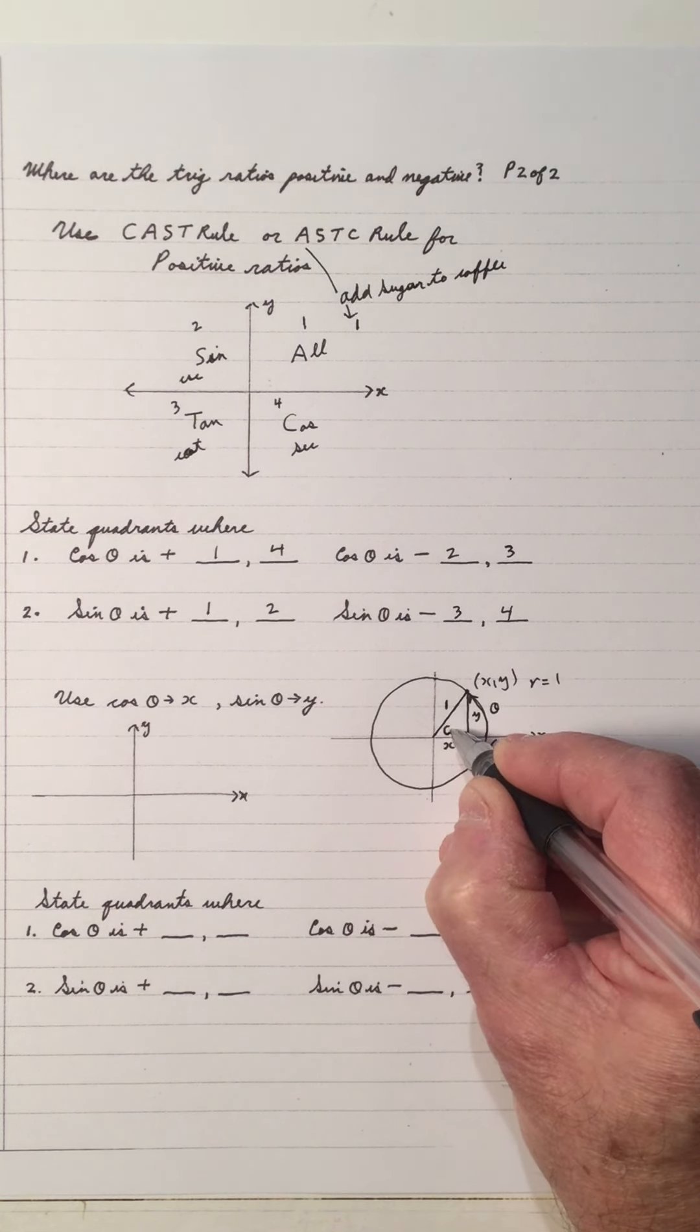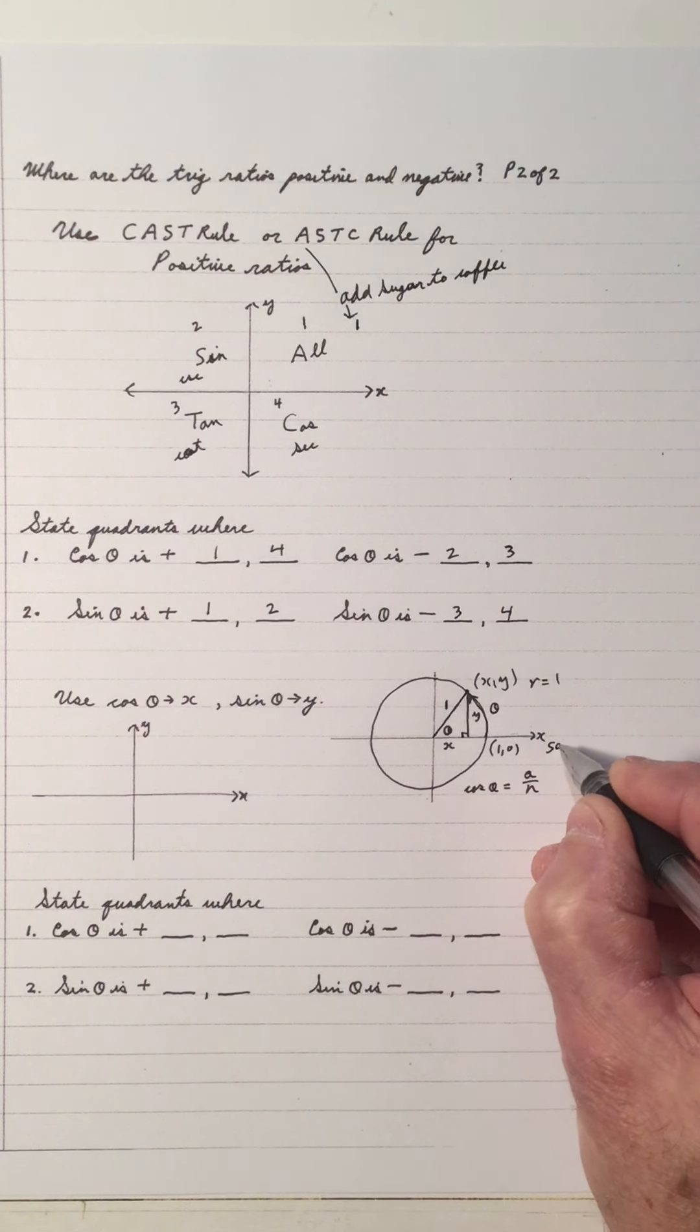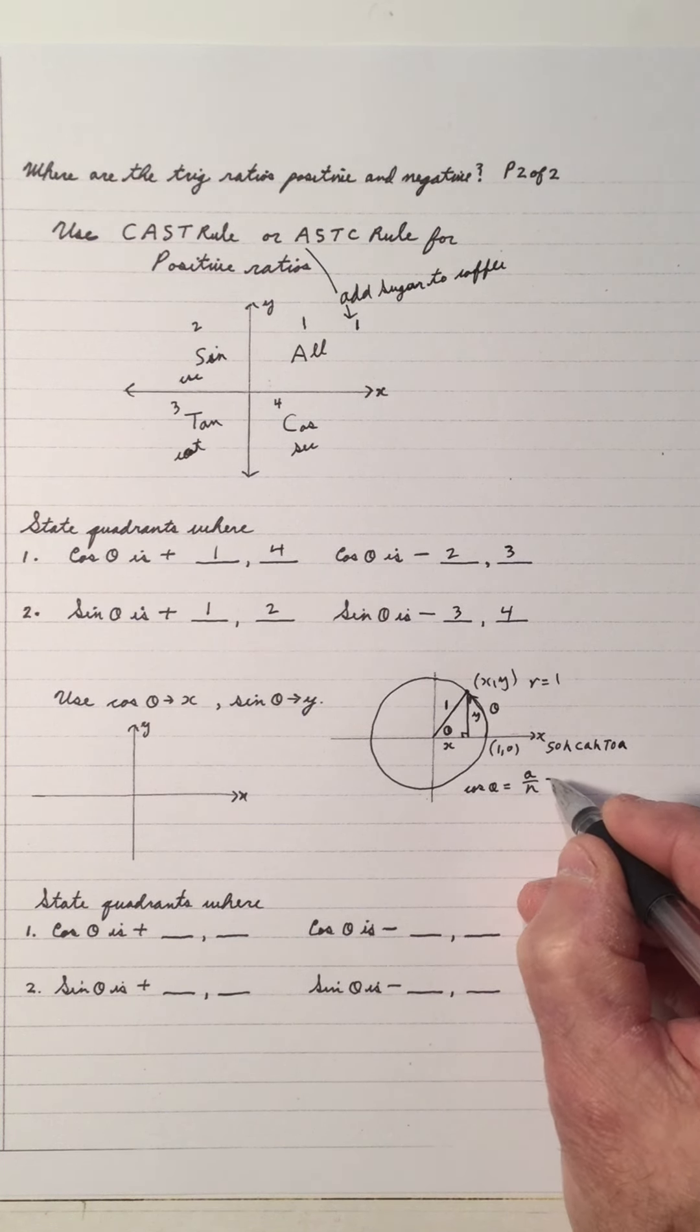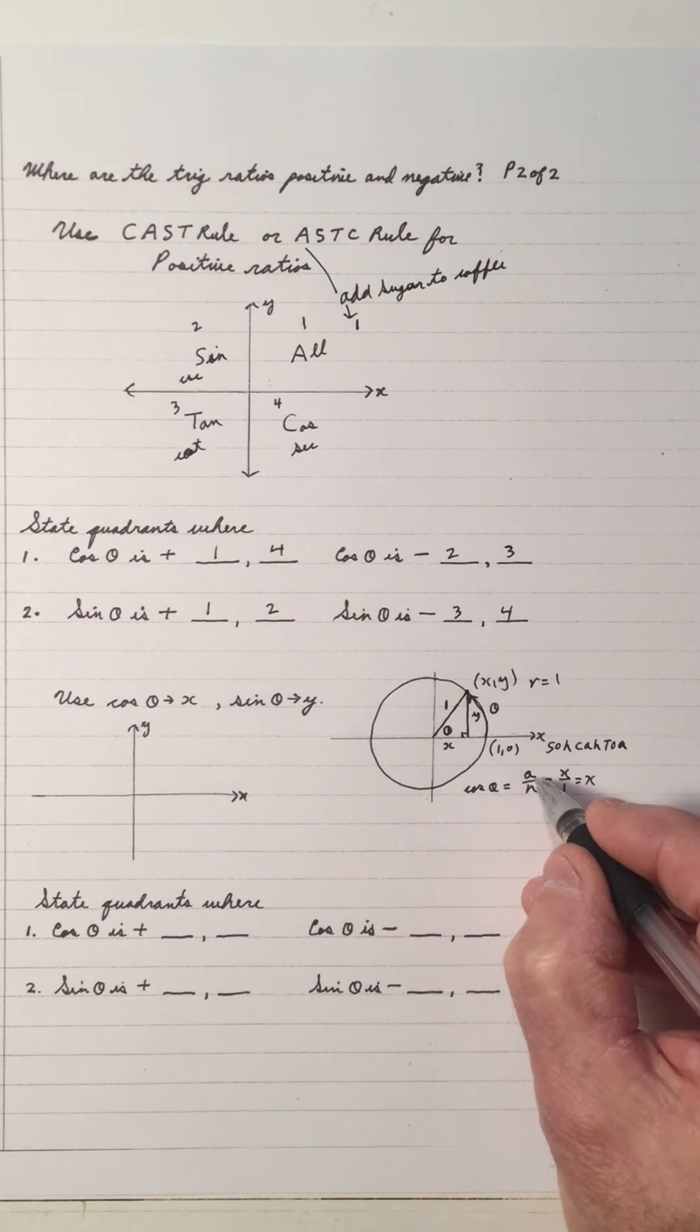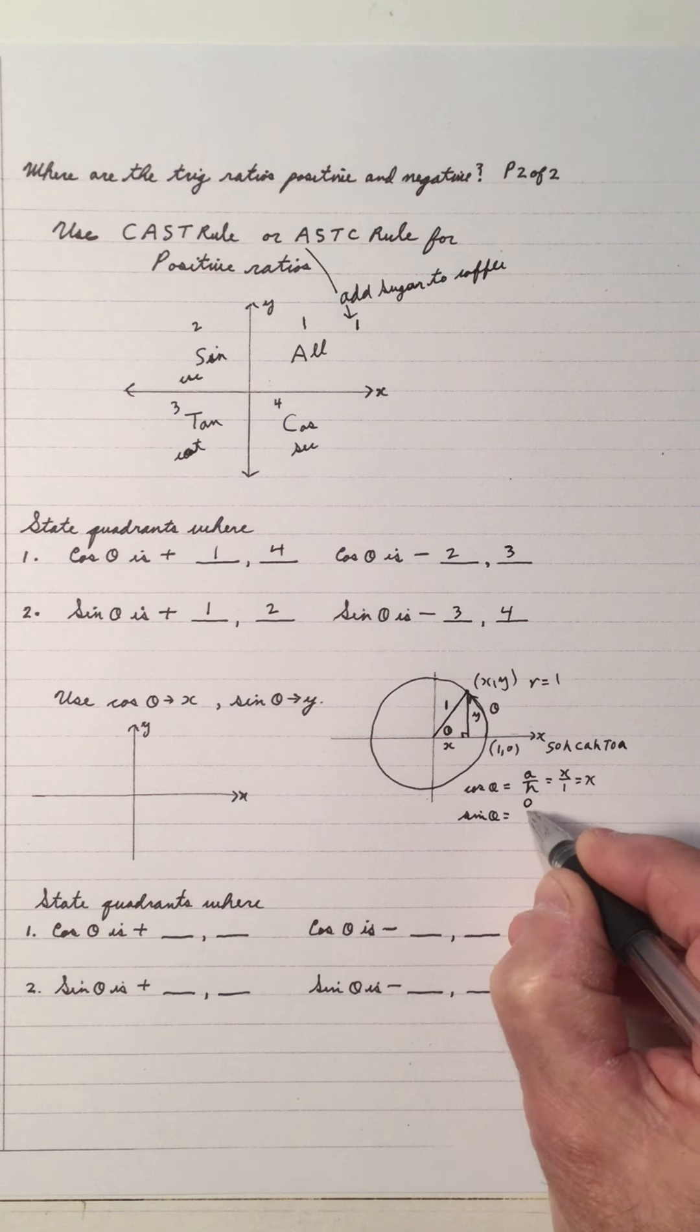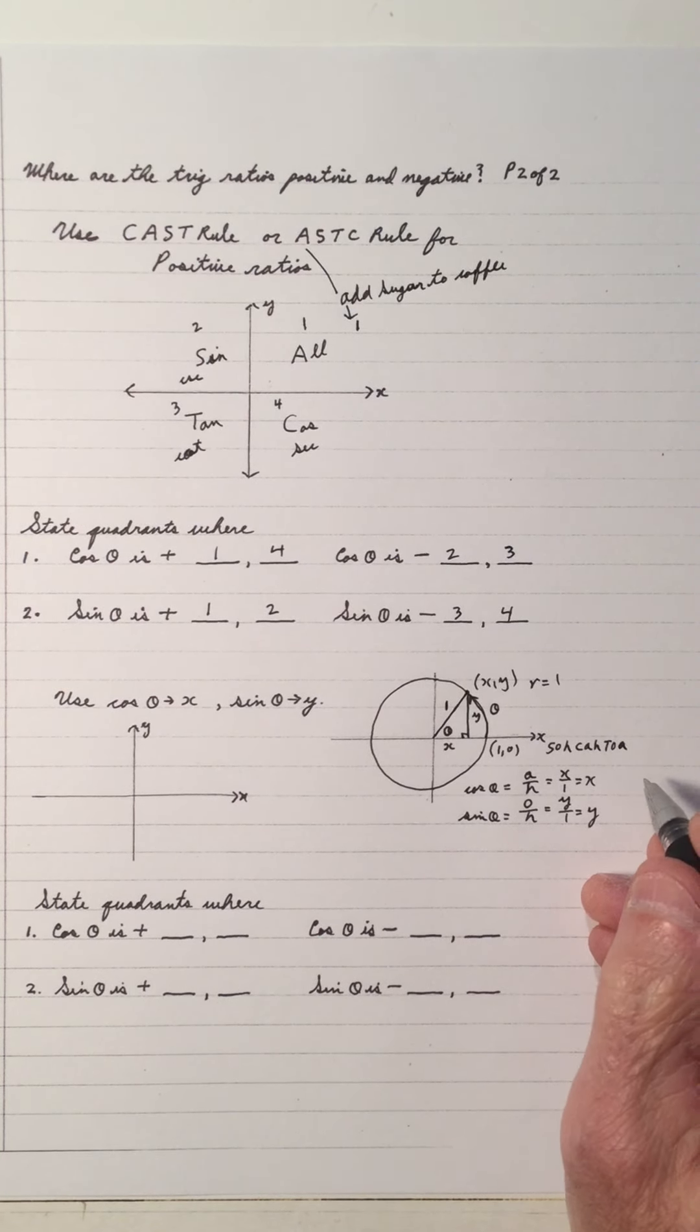But notice that cos theta is this rotation right here. So that means this angle right here is theta, or the reference angle. So the cos of theta, cos is the adjacent over the hypotenuse, sohcahtoa. And the adjacent is x over 1, so cos theta is x over 1, or x. And sine theta is sine is opposite over hypotenuse, which is the y over 1, or the y. So on the unit circle whose radius is 1, I always associate that cos.